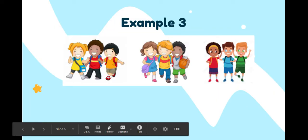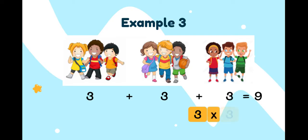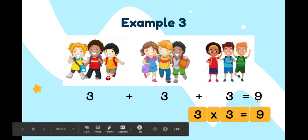Example number three. How many groups of students are there? Three groups. And each group has three students. Let's count: three plus three plus three is equal to nine. And the multiplication sentence is three groups of three students, means three times three is equal to nine. The same like this — nine.